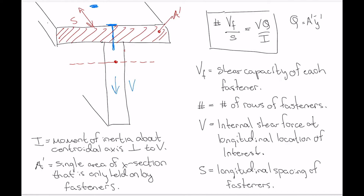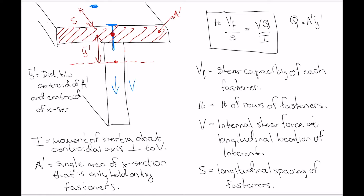Ȳ' is the distance between the centroid of A' and the overall centroid of the cross section — more precisely, the perpendicular distance between the horizontal centroidal axis of A' and the horizontal centroidal axis of the whole cross section when dealing with a vertical shear force. Now we've got all those variables defined.